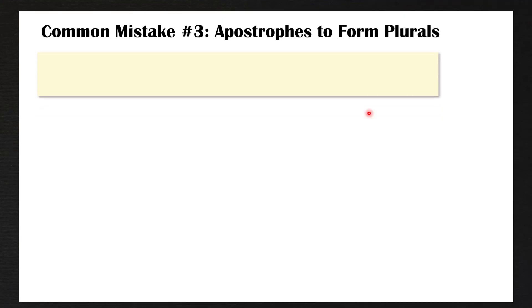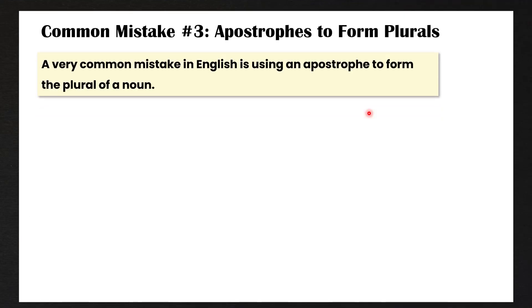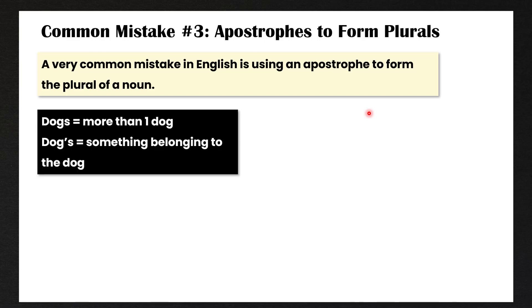And finally, the last common mistake: a very common mistake in English is using an apostrophe to form the plural of a noun, and this is incorrect. I have many friends that do this all the time, and they are native English speakers. For example, if you wrote dogs like this, that is correct — it means more than one dog. But if you write dog's with an apostrophe S, you're not talking about more than one dog — you're talking about something that belongs to this dog.